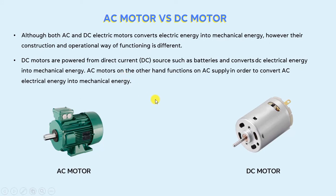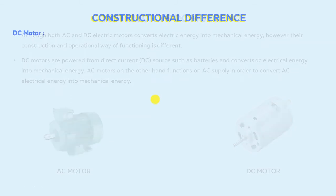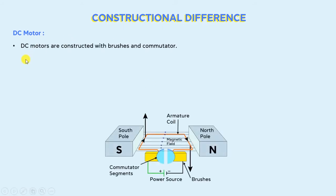Now let's discuss the other various differences of AC and DC motors in detail. First of all, we will talk about the constructional difference. The main difference between AC and DC motors is that DC motors are constructed with brushes and commutator. Here you can see this is the cross-sectional view of a DC motor, and these are the commutator segments and brushes which are used in the DC motor.